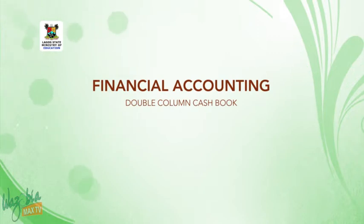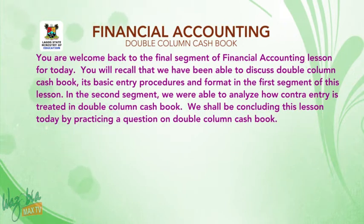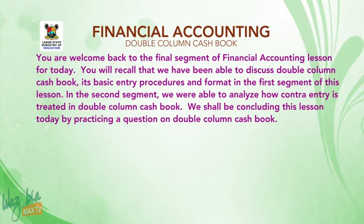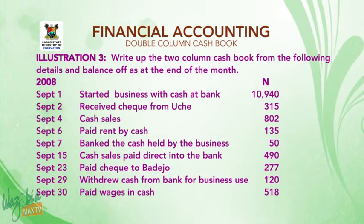Welcome back to the final segment of the financial accounting lesson. We have discussed double-column cashbook, its basic entry procedures and format in the first segment, and contra-entry in the second segment. We shall conclude by practicing a question on double-column cashbook. Write up the two-column cashbook from the following details and balance off at the end of the month.